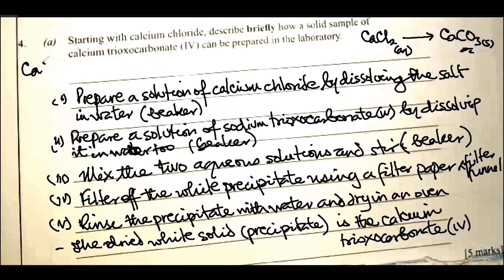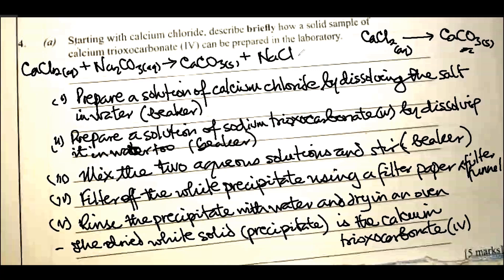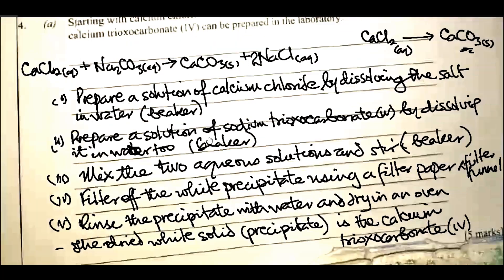The equation of reaction is: CaCl₂(aq) + Na₂CO₃(aq) → CaCO₃(s) + 2NaCl(aq). The equation of reaction was not needed — I just added that to help you understand better.